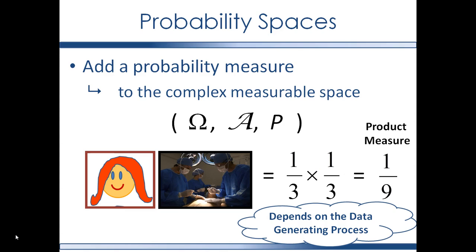However, this only works if the two event spaces are independent — we introduced independence in the previous video. If the two data generating processes are unchanged by combining them, then they are independent. But if a new data generating process is needed when the two outcomes are combined, then they would be dependent, not independent.